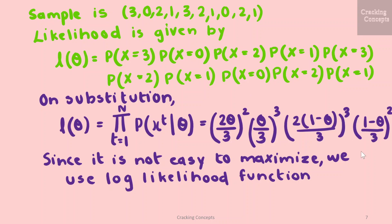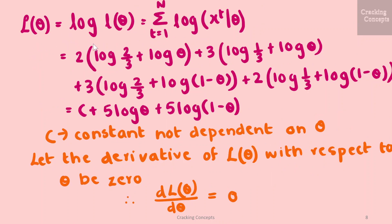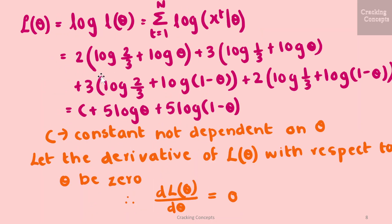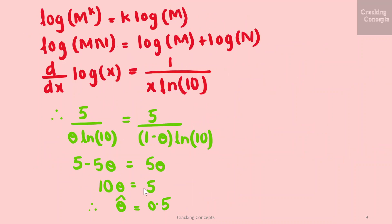On substituting the values we get an expression that is not easy to maximize, so we take the log of this likelihood function L(θ). We then group all constants not dependent on θ into c, consider only those containing θ, and set the derivative with respect to θ equal to 0. Applying the rules of logarithms — log(m^k) = k·log(m), log(m·n) = log(m) + log(n), and derivative of log(x) = 1/(x·ln(10)) — and substituting the values and taking the derivative, we get the maximum likelihood estimate θ̂ = 0.5.